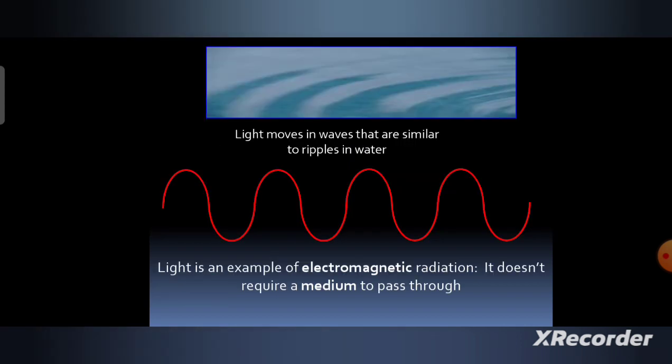Light moves in waves that are similar to ripples in water. Light is an example of electromagnetic radiation, and it does not require a medium to pass through.